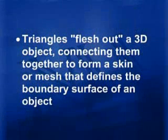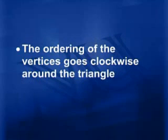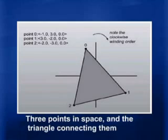This brings us to the end of the review of projections. Now we are going to start talking about triangles, which are the basis of most modern graphics rendering as well as rasterization techniques. We use triangles by dividing surfaces into a series of triangles, then processing each triangle individually in our algorithms. Triangles flesh out a three-dimensional object, connecting them to form a skin or mesh defining the boundary surface of an object. The ordering of vertices goes clockwise around the triangle.